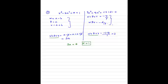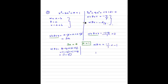The second part asks for b. We know alpha beta gamma equals minus d divided by p. So alpha times beta times gamma is (a minus b) times a times (a plus b). With a equals 1, this becomes (1 minus b) times 1 times (1 plus b), which equals 1 minus b squared. According to the formula, this equals minus d divided by p, where d equals 1 and p equals 1, so it equals minus 1. Therefore 1 minus b squared equals minus 1, giving b squared equals 2, so b equals plus or minus root 2.